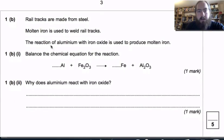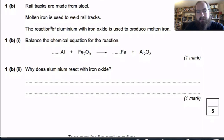Okay, second part of the question. Rail tracks are made from steel. Molten iron is used to weld rail tracks. Important there, so it's iron. The reaction of aluminum with iron oxide is used to produce molten iron. So we're reacting aluminum with iron oxide. That's a compound to produce molten iron, which is back to the element. This is the equation here. And we need to balance this.